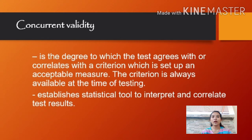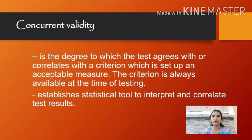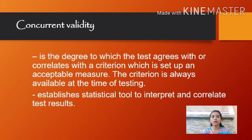The second type of validity is concurrent validity. It is the degree to which the test agrees with or correlates with a criterion set up as an acceptable measure. The criterion is always available at the time of testing. It also establishes statistical tools to interpret and correlate test results.